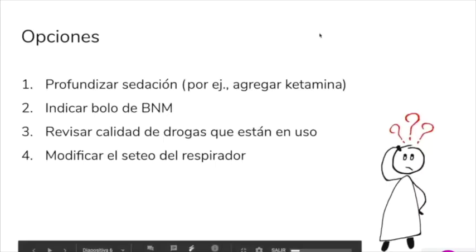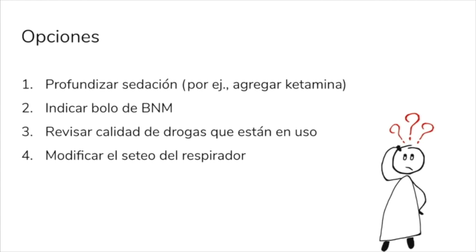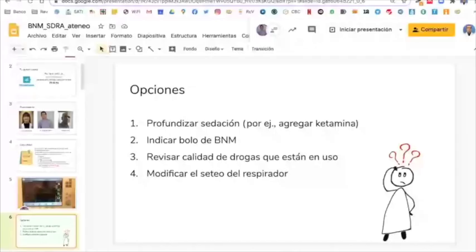La primera pregunta es: elijan qué hacemos con ese paciente. La primera opción es profundizar sedación, por ejemplo agregar ketamina o el sedante que les guste. La segunda es indicar un bloqueante neuromuscular. La tercera es revisar la calidad de las drogas, porque probablemente esté fallando porque las drogas son de mala calidad. Y la última es modificar el seteo del respirador.